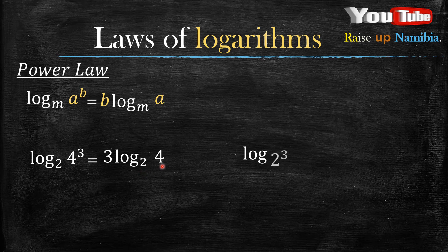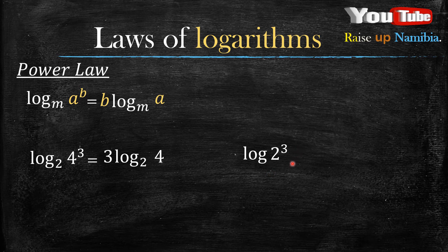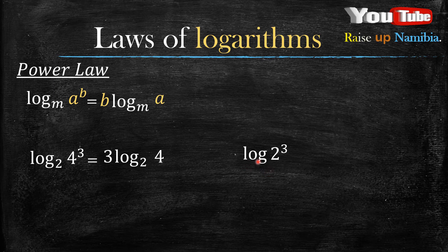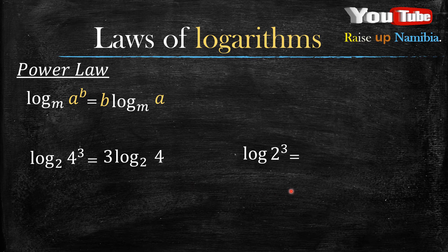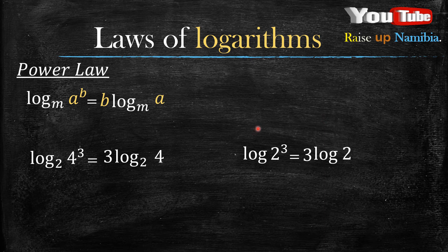Now, how about if you have an example like this, where you have log base 10 of 2 raised to the power 3? Remember, when there's no base written, it means the base is 10 because it's called a common logarithm. It's the same concept: you write your log with the same base, and then the number as well, just the same way. But your exponent, you take it to the front, and just like that, you have rewritten this as well.